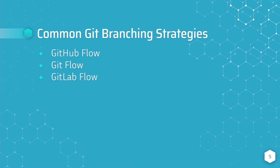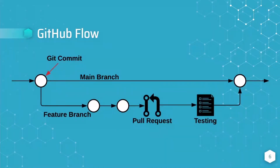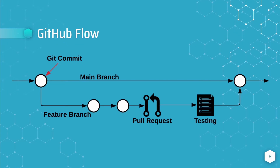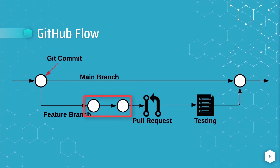Let's take a look at each of these branching strategies. We'll start with the GitHub flow. The GitHub flow is the simplest workflow of the three. Each of the white circles in the graph represent Git commits. The GitHub flow begins by creating a feature branch off of the main branch. While checked out to the feature branch, we would make some number of changes until we feel like our feature is ready to be reviewed by others and undergo automated testing. We would then upload our changes to GitHub by using the git push command.